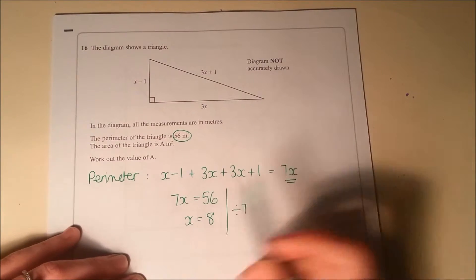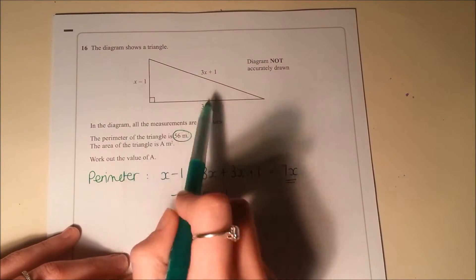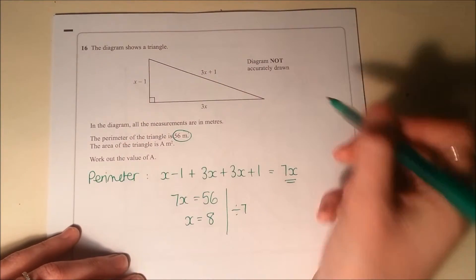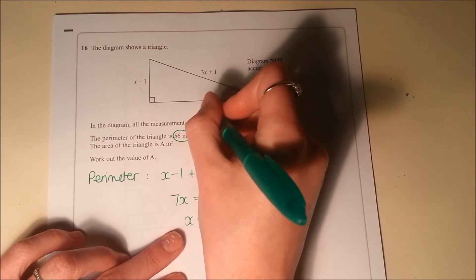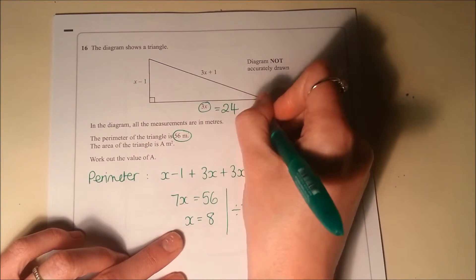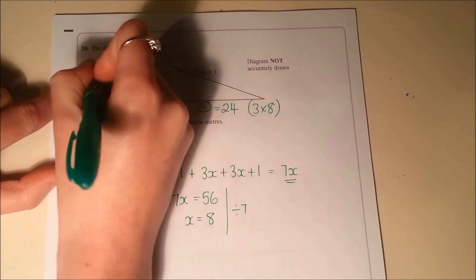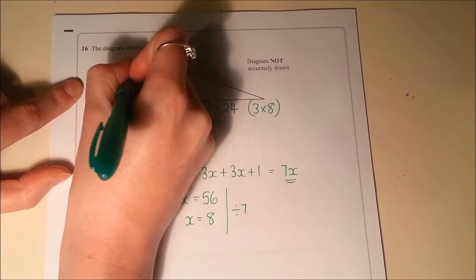Once I've got that x is 8, I can then work out these side lengths. So once I can work out these side lengths, I can then work out the area of the triangle. So if x is 8, 3x is going to be 24, 3 times 8. And then here, if x is 8, 8 minus 1 is going to be 7.